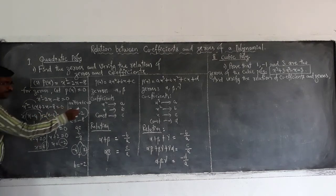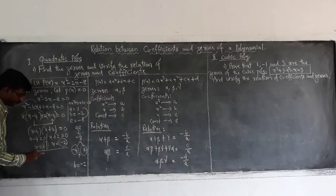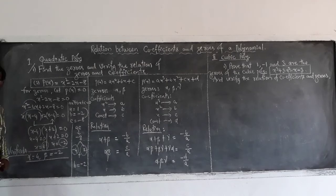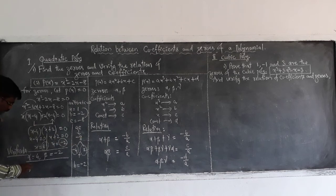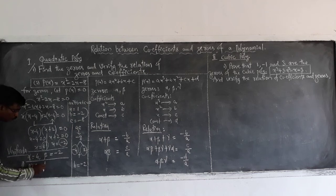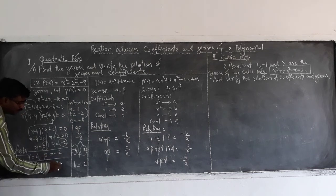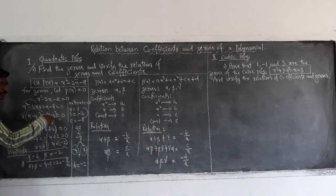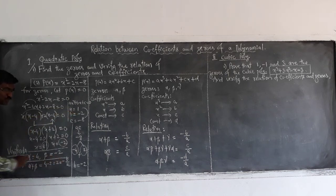That means here alpha is 4. Let us take alpha equal to 4 and beta equal to minus 2. Now let us verify the relation. That is the first one is alpha plus beta. That equal to 4 plus minus 2. That is plus 2. Now observe this. This is minus b by a. Why? Because here b is minus 2. And minus of minus 2 is plus 2. And a is 1.